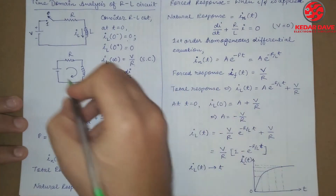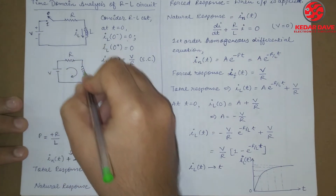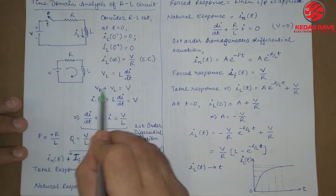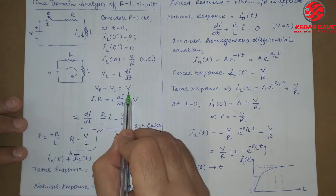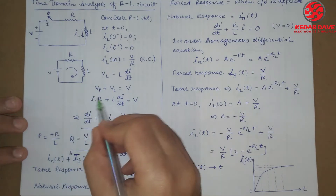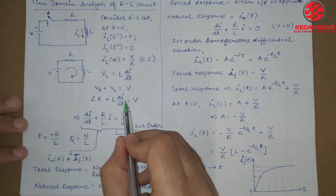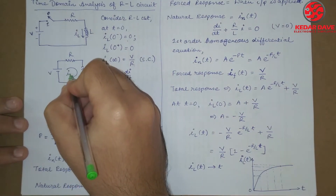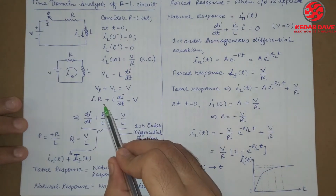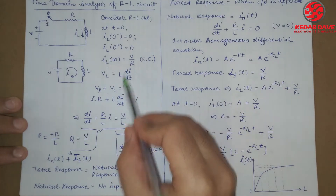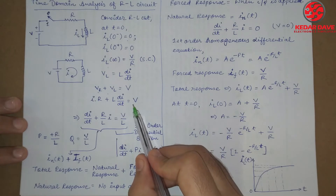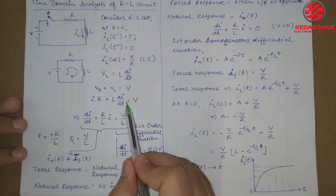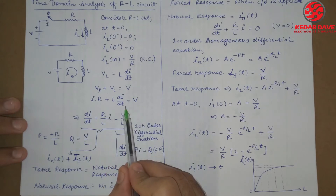So if we apply KVL in this loop — here is my voltage V, the resistor R is connected and inductor L is here. We call the resistor voltage VR, the inductor voltage VL, and the total voltage V. Applying KVL: VR equals I multiplied by R, so we get I·R plus VL equals V, where VL equals L·dI/dt.